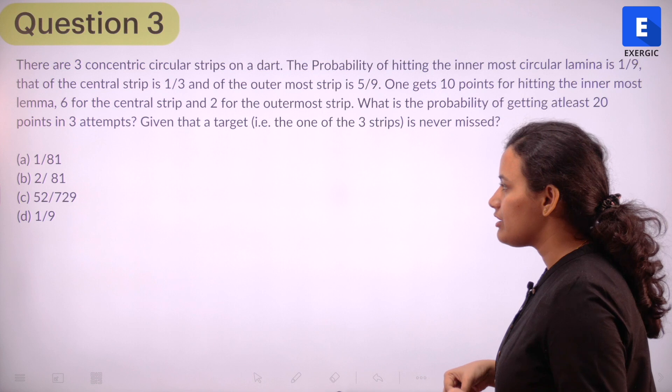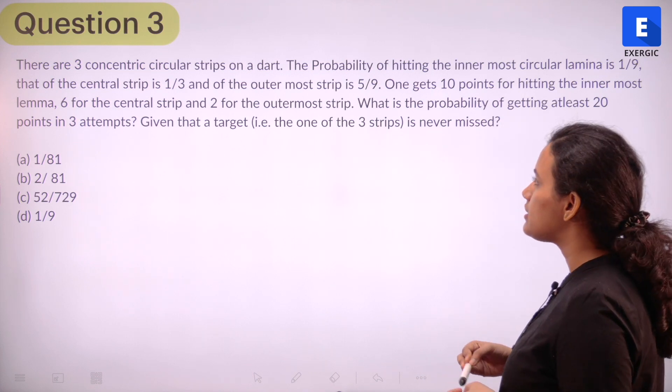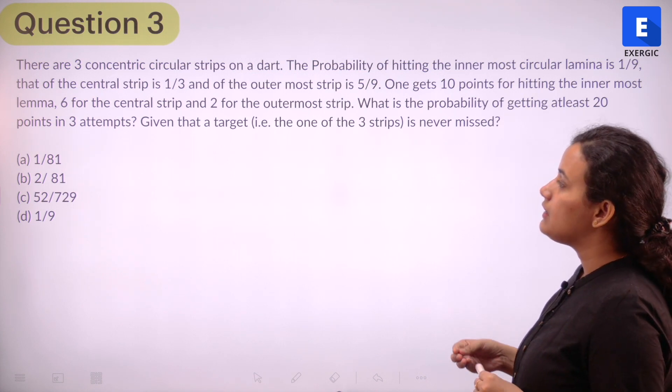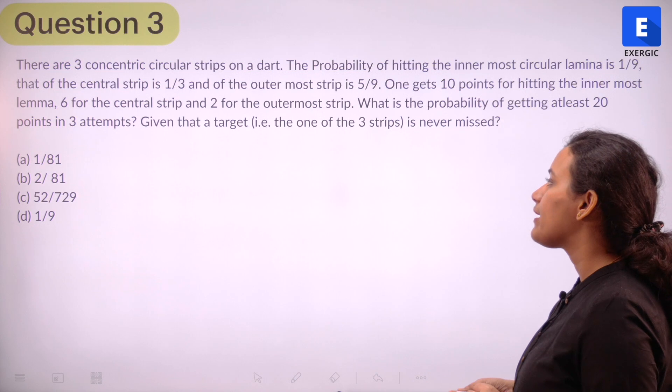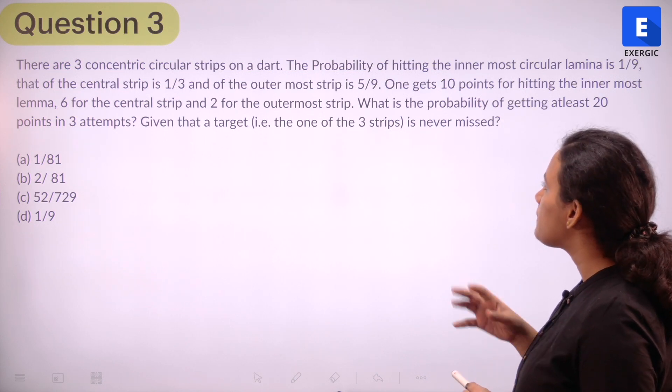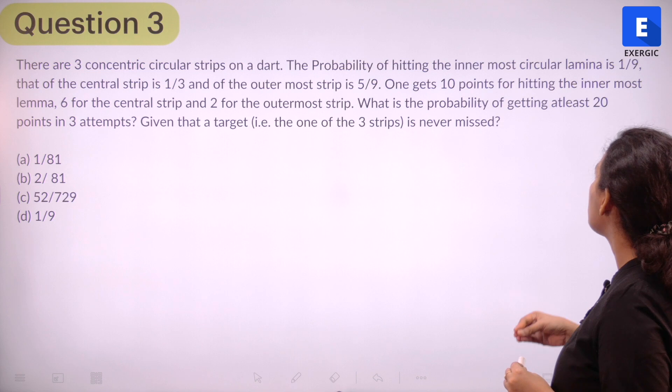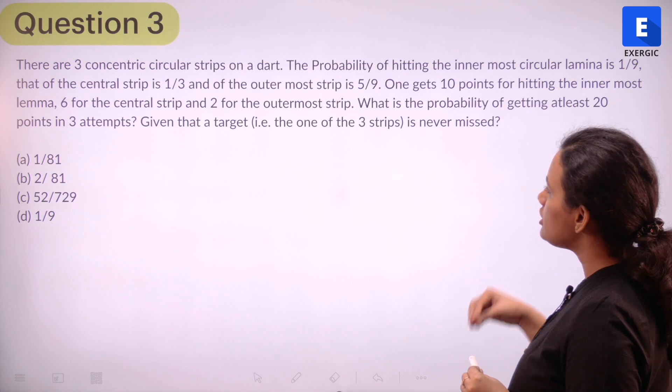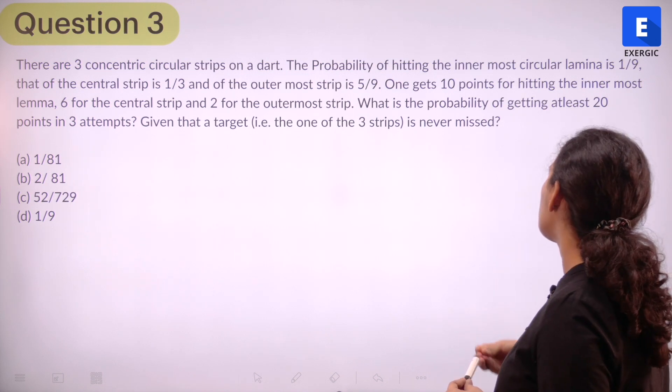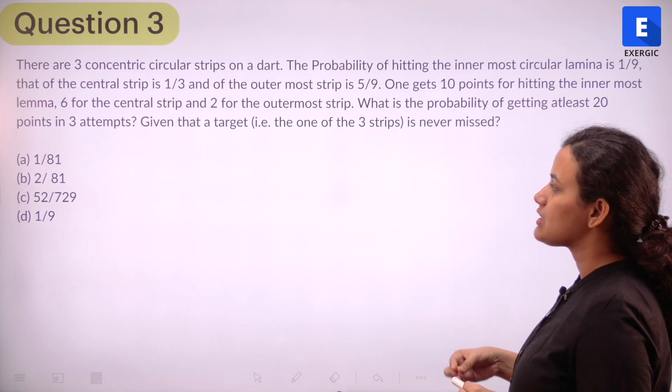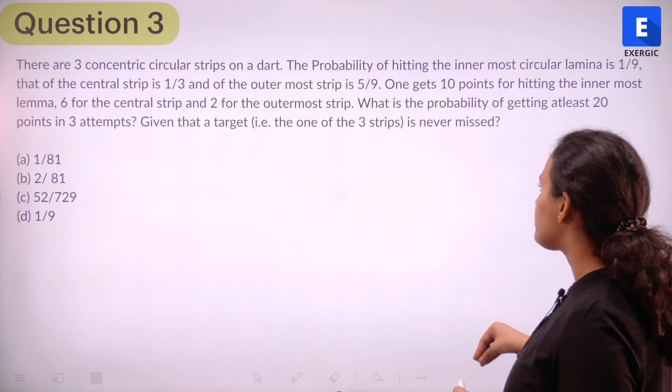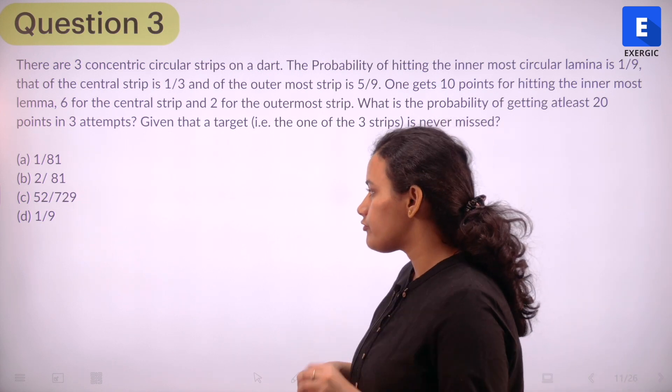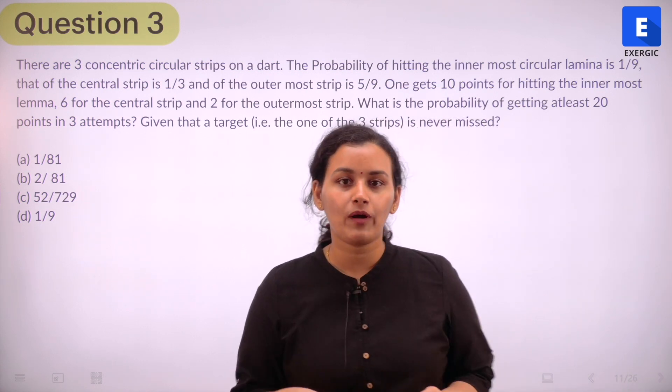It has been given that there are three concentric circular strips on a dart. The probability of hitting the innermost circular lamina is 1 by 9. That of the central strip is 1 by 3. Of the outermost strip is 5 by 9. One gets 10 points for hitting the innermost lamina, 6 for central strip and 2 for the outermost strip. What is the probability of getting at least 20 points in three attempts given that a target is never missed? The options are 1 by 81, 2 by 81, 52 by 729, and 1 by 9.